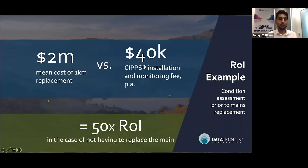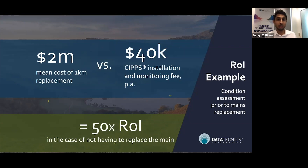To bring this to life: if a utility had scheduled the replacement of a one kilometer main suspected as failing, this would cost around two million dollars. Instead of replacing that main straight away, by installing SIPS for two percent of the cost of replacement, the utility could conduct a condition assessment. If SIPS were to determine that the pipeline was in fact healthier than anticipated, SIPS would instantly provide a 50x ROI to that utility.